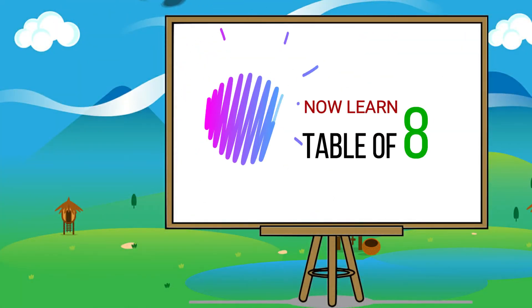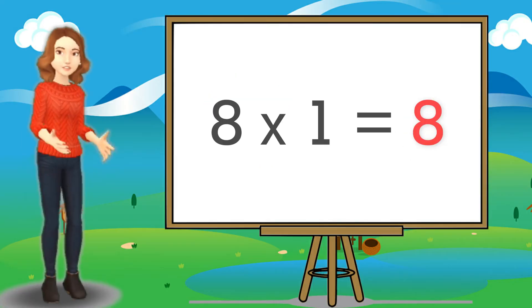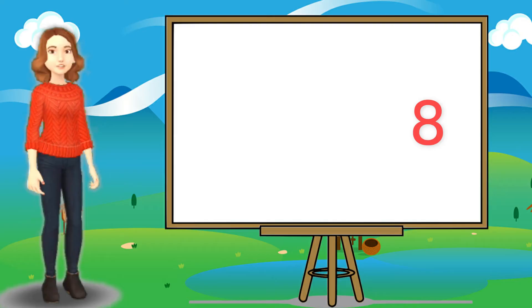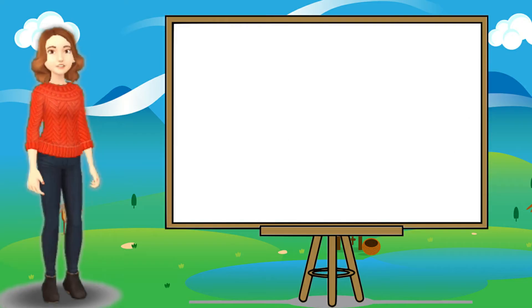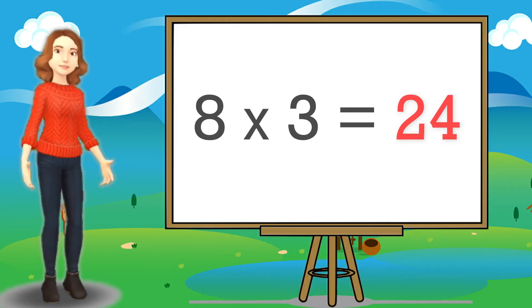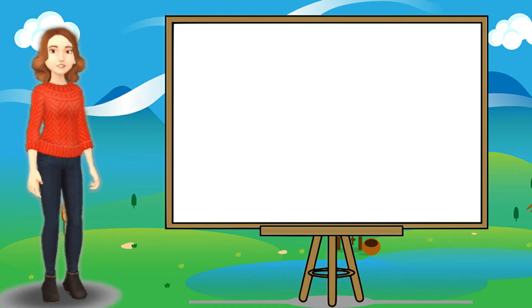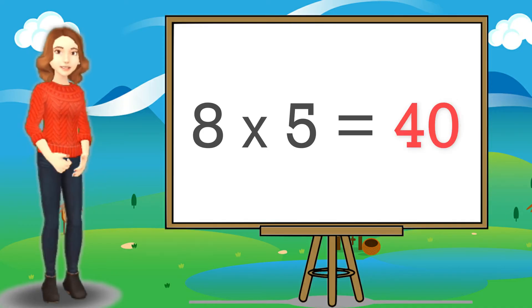Now learn table of 8. 8 ones are 8. 8 twos are 16. 8 threes are 24. 8 fours are 32. 8 fives are 40.